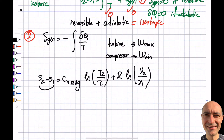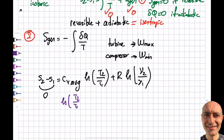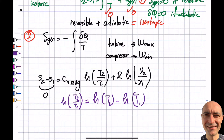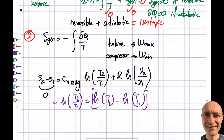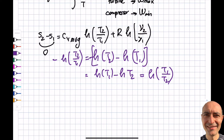For an isentropic process, the TdS equation equals zero. Rearranging the ln terms: since I move one term to the other side, the negative sign causes ln(T2/T1) to become ln(T1/T2). That is, a negative in front of an ln term causes the numerator and denominator to swap.